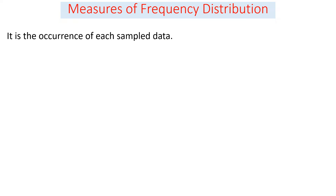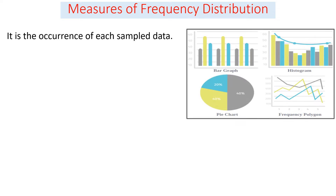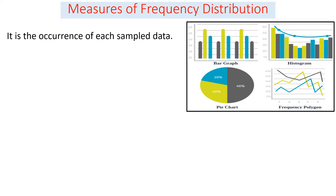Moving to the first type of descriptive analysis: measures of frequency distribution. Frequency refers to the occurrence or repeatedness of each sample data point. Frequency distribution can be described using graphical representations or using a table.